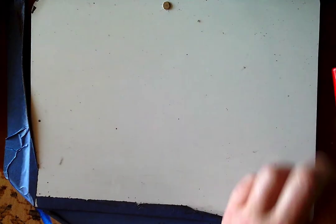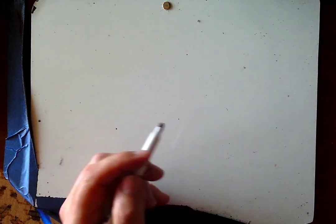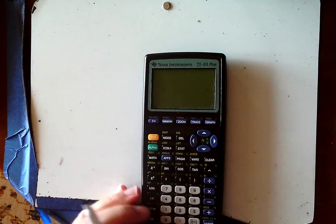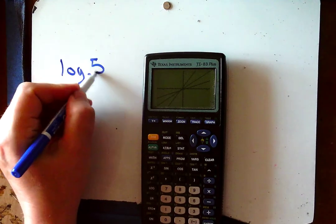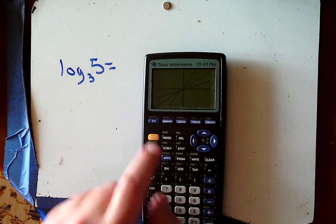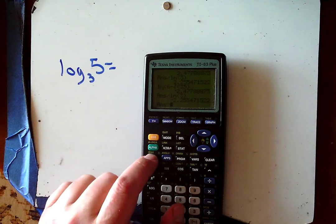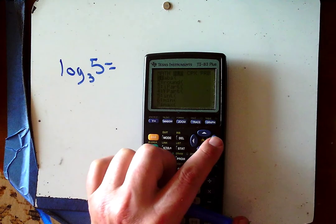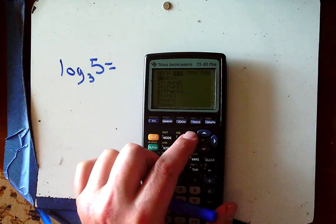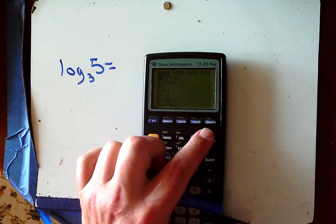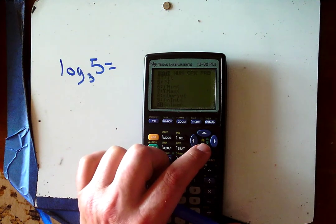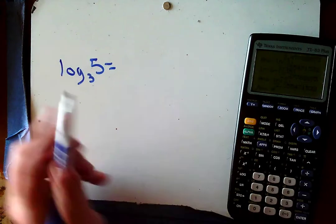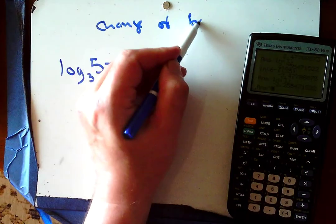One other thing: the change of base formula. This is sometimes helpful in class. With my calculator I have a log button and an ln button, but no log base 3 button. So if I want to evaluate log base 3 of 5, I can't do it directly unless I use the change of base formula.